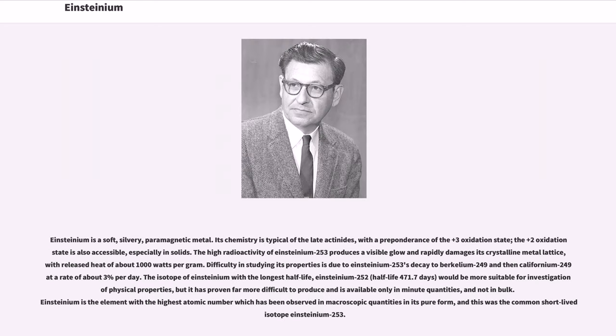Einsteinium is a soft, silvery, paramagnetic metal. Its chemistry is typical of the late actinides, with a preponderance of the plus-3 oxidation state. The plus-2 oxidation state is also accessible, especially in solids. The high radioactivity of Einsteinium-253 produces a visible glow and rapidly damages its crystalline metal lattice, with released heat of about 1,000 watts per gram. Difficulty in studying its properties is due to Einsteinium-253's decay to berkelium-249 and then Californium-249 at a rate of about 3% per day.